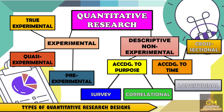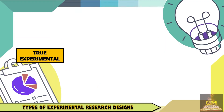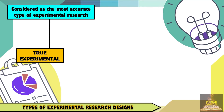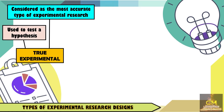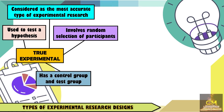As mentioned earlier, we're going to focus on the different types of experimental research designs. In a previous video, we talked about the true experimental research design. To have a recap, the true experimental research is considered as the most accurate type of experimental research design. Also, it is used to test a hypothesis.